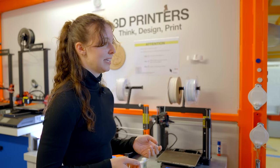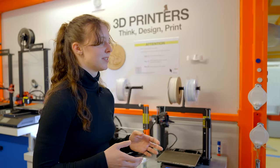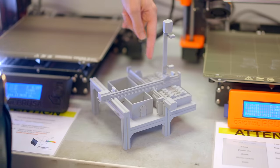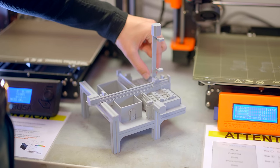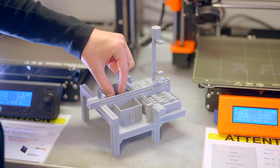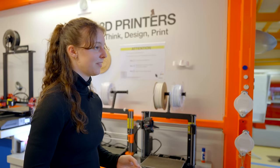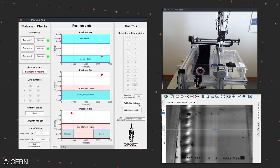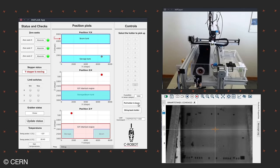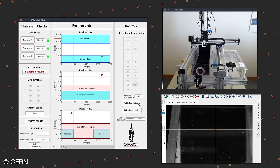One of the challenges in this experiment was that the samples of the cells had to be switched after being irradiated. At CLEAR they developed a robot to change the samples automatically without having to stop the beam.